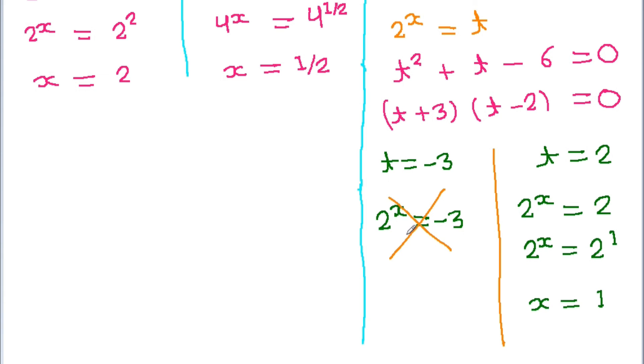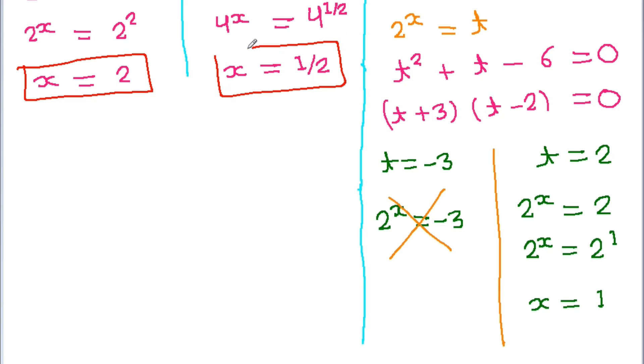So we get three values of x: x equals 2, x equals 1 over 2, and x equals 1.